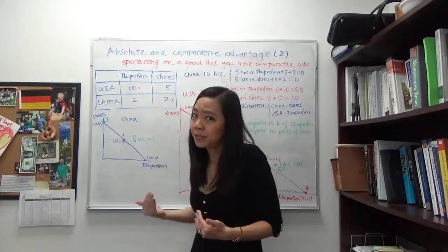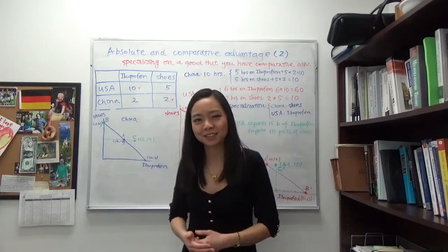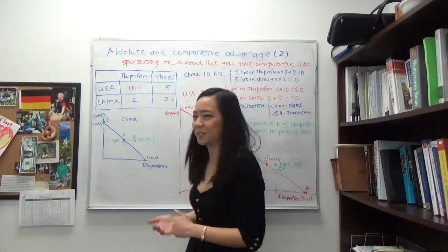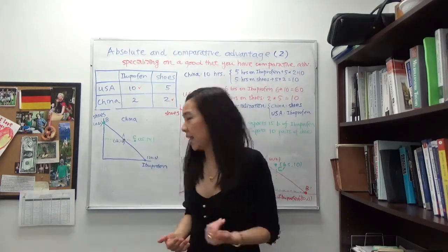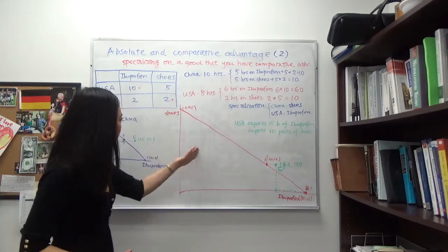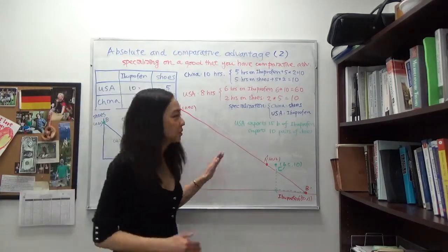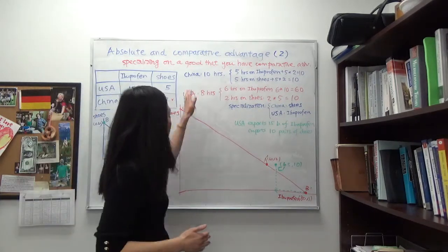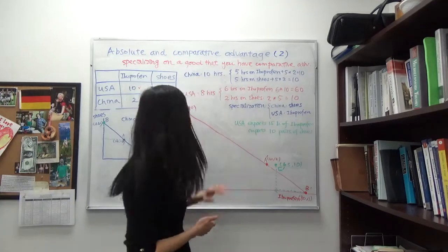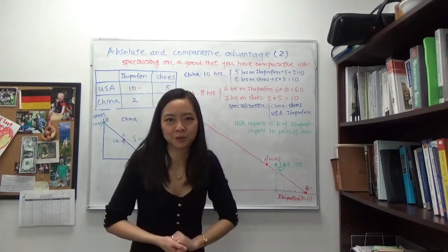If you don't remember that, please go back to the previous video and review it before we continue. Now here would be their production possibility curves. Suppose China has ten labor hours and USA has eight labor hours as their resources.